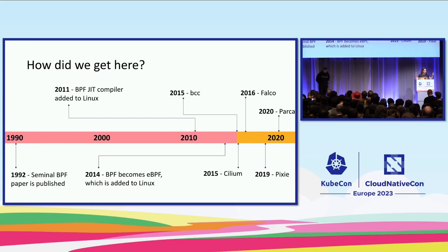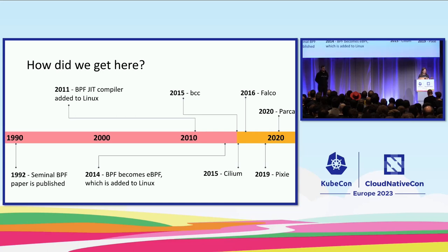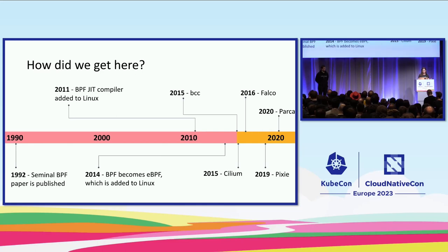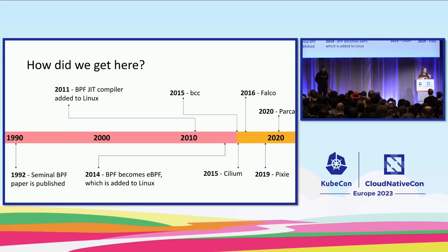Let's look at a zoomed-out timeline. In 1992, the seminal BPF paper — distinct from eBPF — was published. Twenty years passed, and the BPF JIT just-in-time compiler was added to Linux around 2011. There was a long innovator phase where people tinkered with this thing. Then in 2014, BPF became eBPF — the Extended Berkeley Packet Filter — and was added to Linux. To me, this is the birth of eBPF as we know it today.